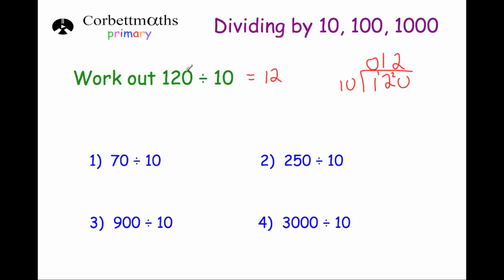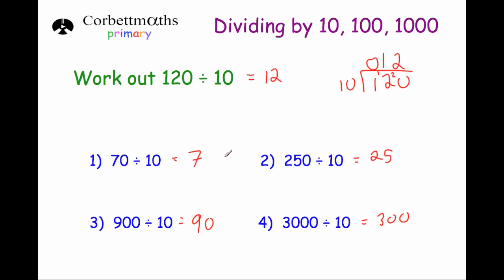You might notice that if we have 120 and we take off a zero, we get the answer of 12. If we had 70 divided by 10, as you know from your 7 times tables, the answer is 7 — that's the same as just taking off the zero from 70. So if we divide numbers that end in zeros by 10, we can just take off one of the zeros. So 250 divided by 10 is 25, 900 divided by 10 is 90, and 3000 divided by 10 is 300. That's a quick shortcut, and we could also work it out using the bus shelter method or knowing that each digit gets 10 times smaller.